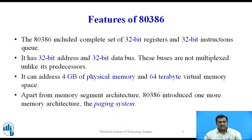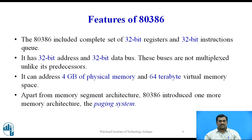Let us see some features of 80386 microprocessor. The 80386 included a complete set of 32-bit registers and 32-bit instruction set. It has 32-bit address and 32-bit data bus. These buses are not multiplexed unlike its predecessor microprocessors; the 80386 has dedicated address and data buses.